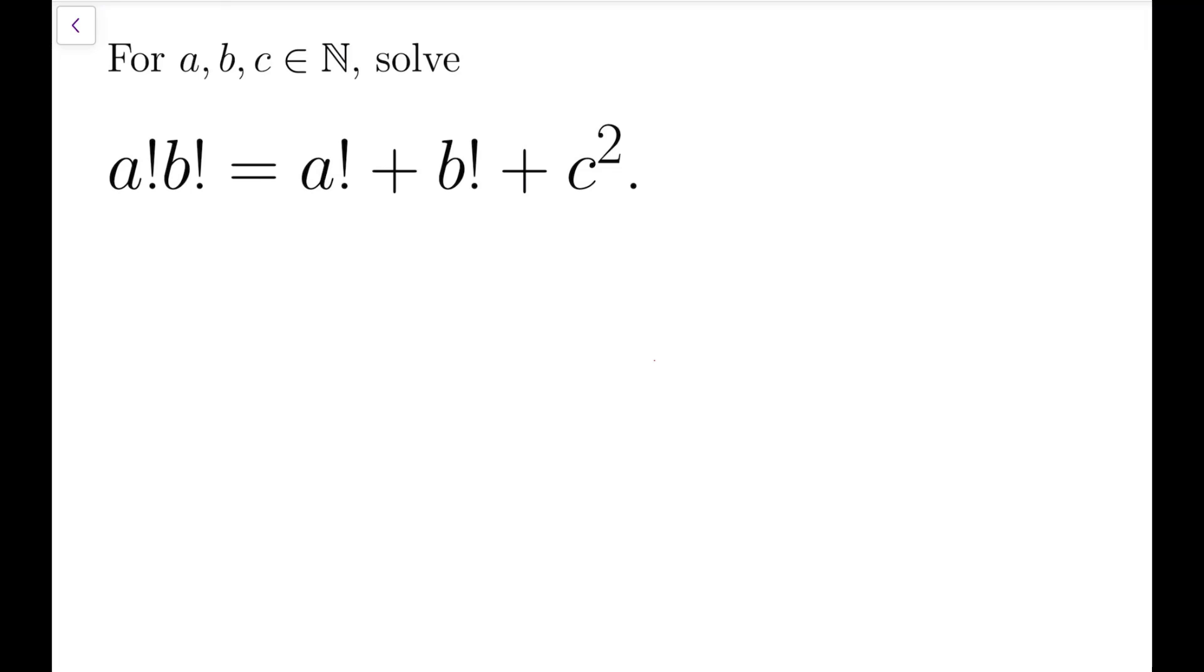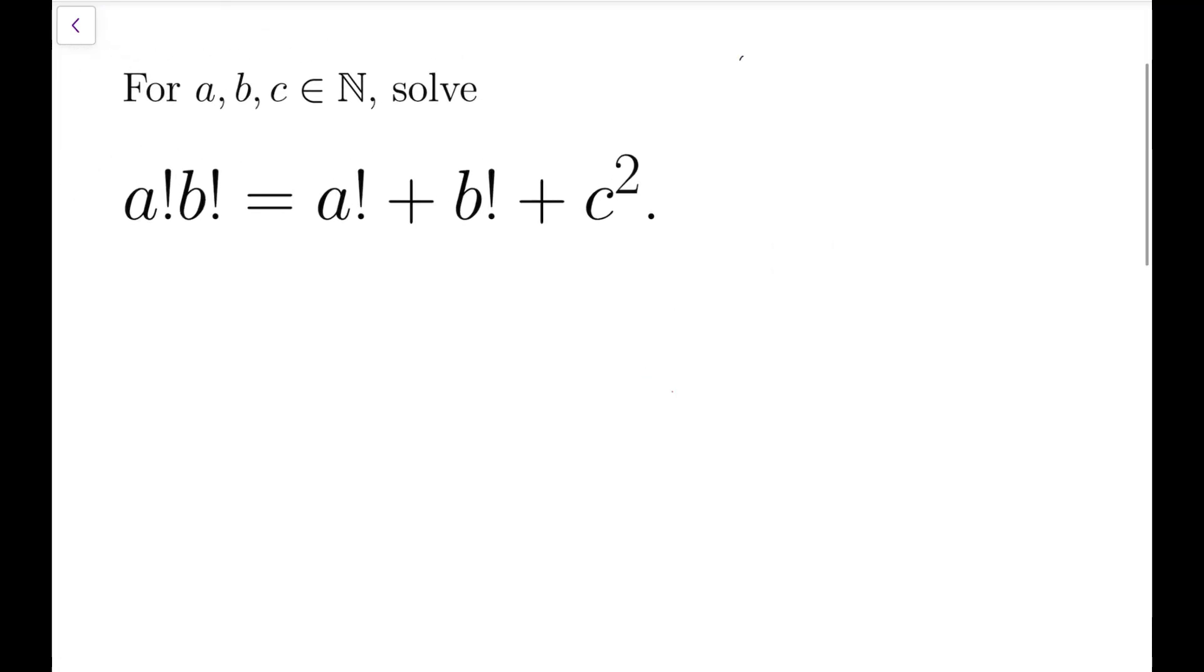For this equation, I'm going to use two tricks. The first one is to factorize, try to factorize to establish some factors on either expressions related to a factorial, b factorial, or c squared. The second thing that I'm going to do is to test for some solutions, which should be motivation for me to establish some bound, say if a is larger than some number, then this equation will have no solution.